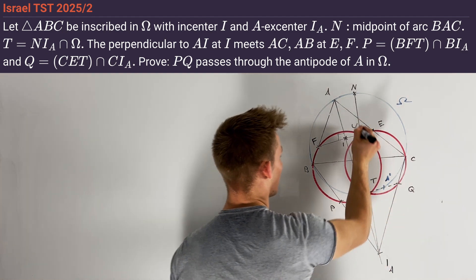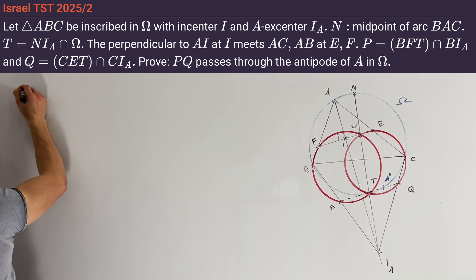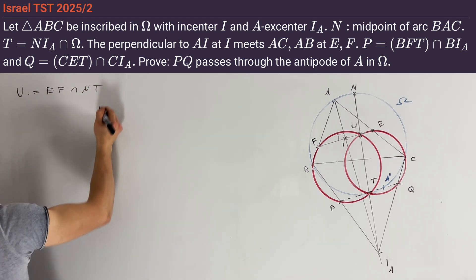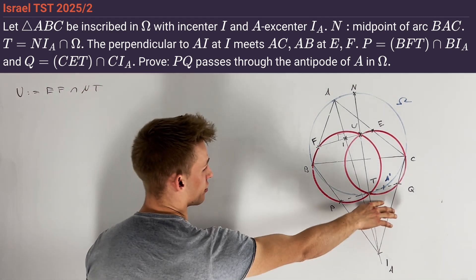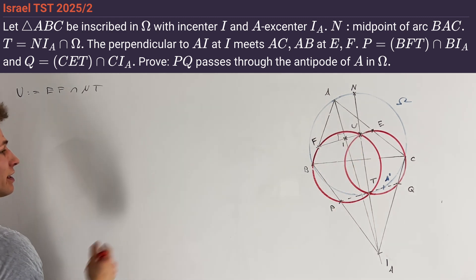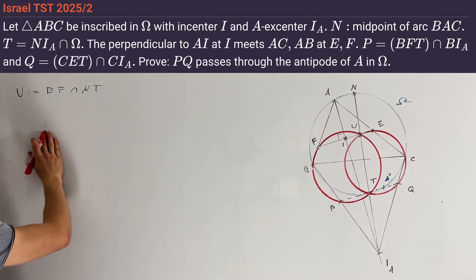Therefore, let's define the point U as the intersection of lines EF and NT. We want to prove that both of the red circles pass through the point U, and we will do this by an angle chase. Here I want to use oriented angles modulo 180 degrees.